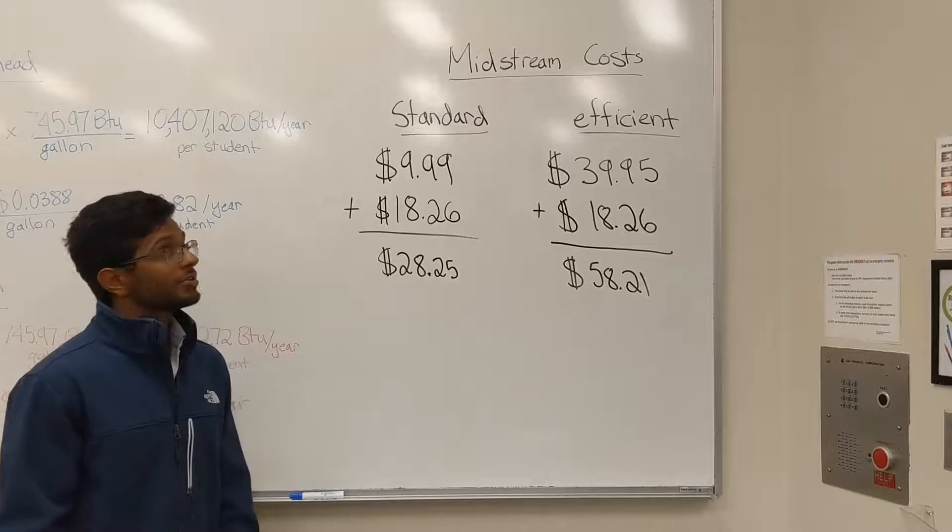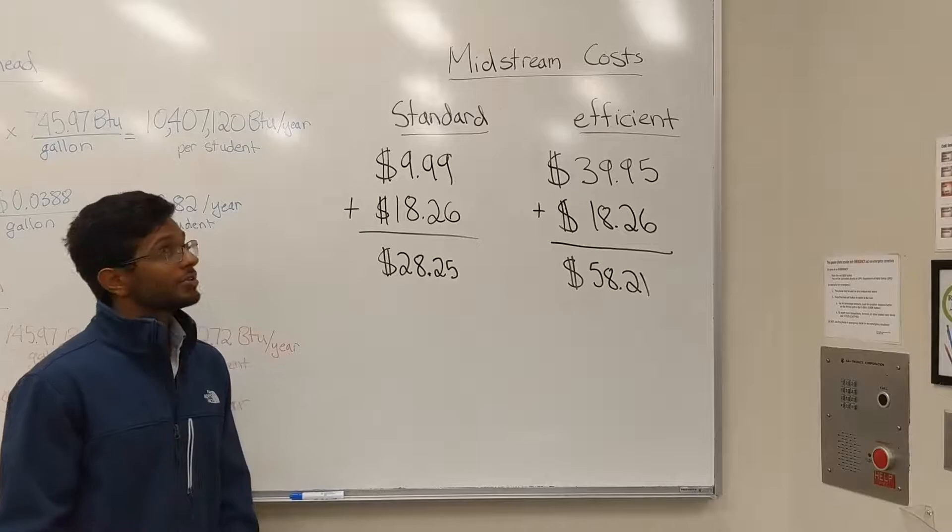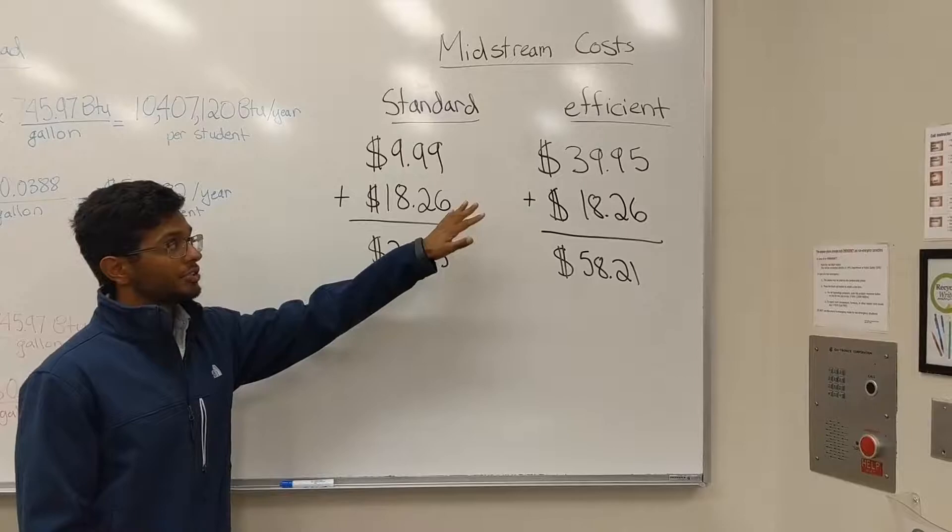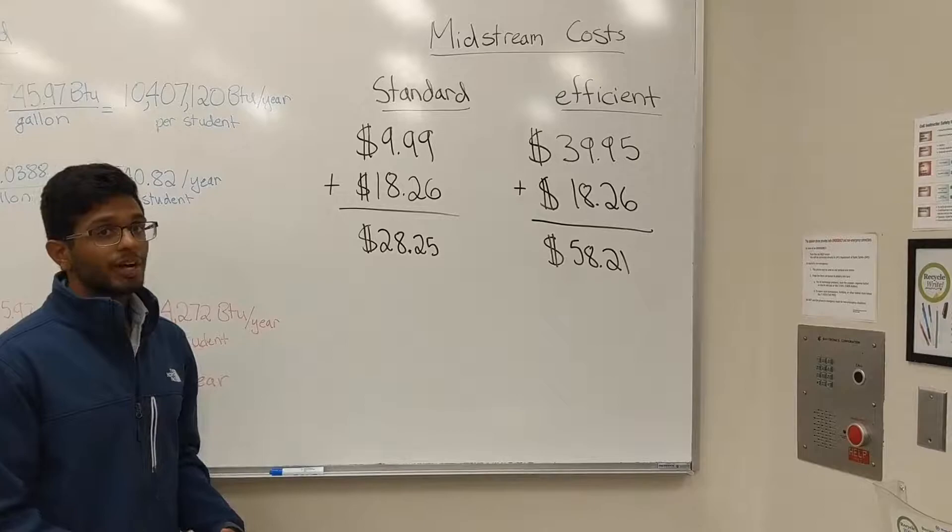Now we will look into midstream costs. The standard shower head costs around $10, and the efficient shower head costs around $40. The tools required to install the shower head costs around $18. So the final midstream cost is $28 per standard and around $58 per the efficient.